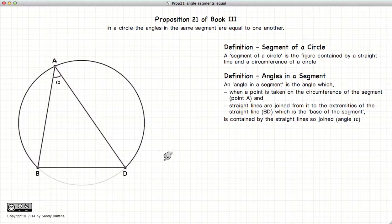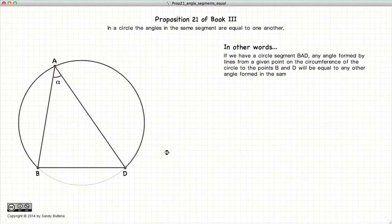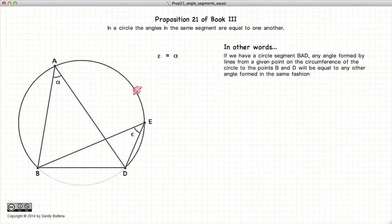So with these two definitions, we have that the proposition is: in a circle, the angles in the same segment are equal to one another. Or, in other words, if we have two angles defined by a point on the circle touching the base, so alpha and epsilon, this proposition states that alpha and epsilon are equal.